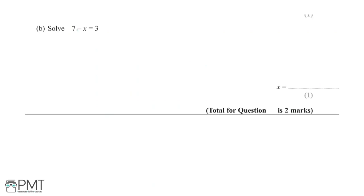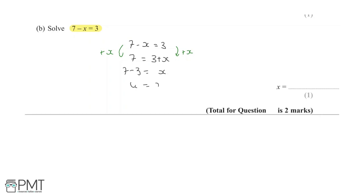Part (b) asks us to solve 7 minus x equals 3 for one mark. Adding x to both sides gives 7 = 3 + x. Subtracting 3 from both sides gives x = 4. You get one mark for the correct final answer of x = 4.